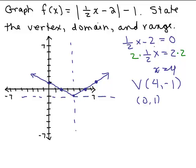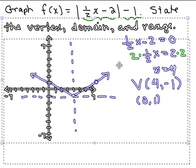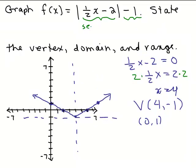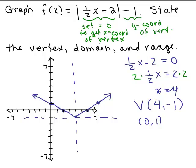In summarizing: to get the vertex point, you set whatever's inside the absolute value equal to 0 to get the x-coordinate of the vertex. Then the constant term outside the absolute value — this number — will be your y-coordinate of the vertex. That will always be true. If there is no constant, you can think of it as plus 0, which would be your y-coordinate.